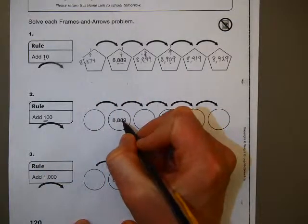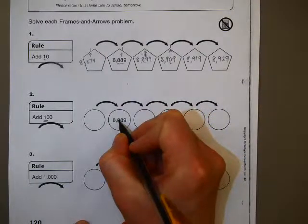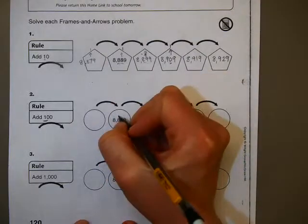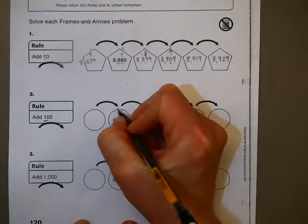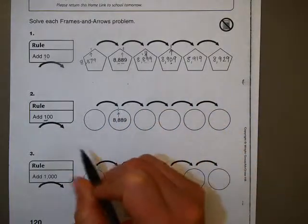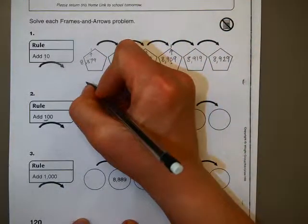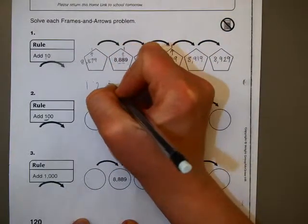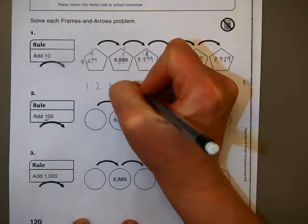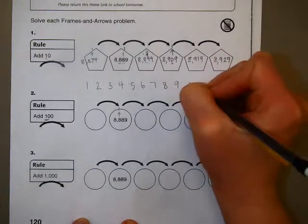Instead of starting with the tens place, which is what we worked on up here, we start with the 100s place. And we do the same thing. So, this one is just going to go up by one. And we're going to do that all the way across. So, the pattern that we're working with here goes up to one, two, three, four, five, six, seven, eight, nine, zero.